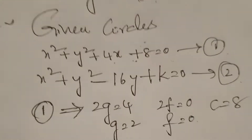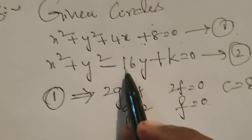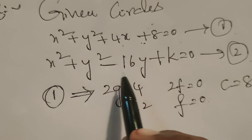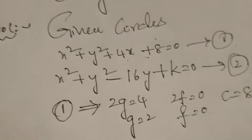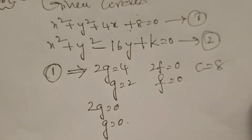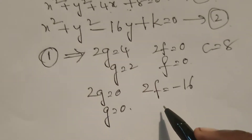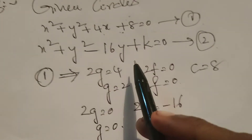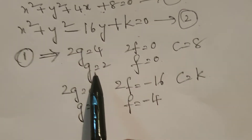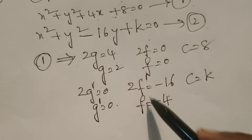Similarly, for the second equation, comparing with the general equation of the circle: 2g — there is no value of x, so g equals 0. Next, 2f equals minus 16, therefore f equals minus 4. And c equals k. In the first equation, we call these g, f, c; and in the second equation, g dash, f dash, and c dash.